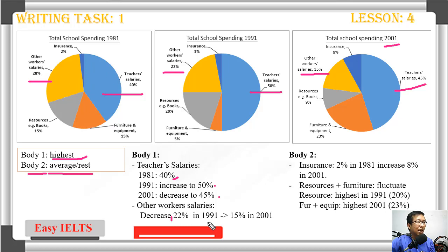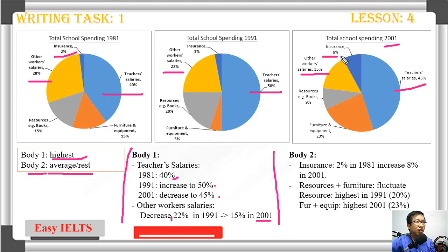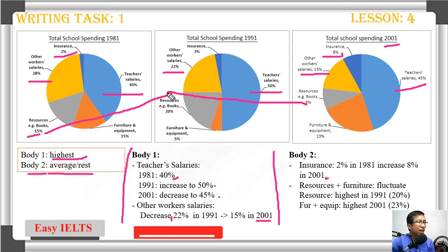Body two talks about the lowest and the rest. Looking at other workers' salary, the numbers start from 28 percent and decrease to 22 percent in 1991 and to 15 percent in 2001. For body two, look at insurance — the number goes from two percent up to three percent and then eight percent. You can say insurance started at two percent in 1981, increasing to eight percent in 2001.